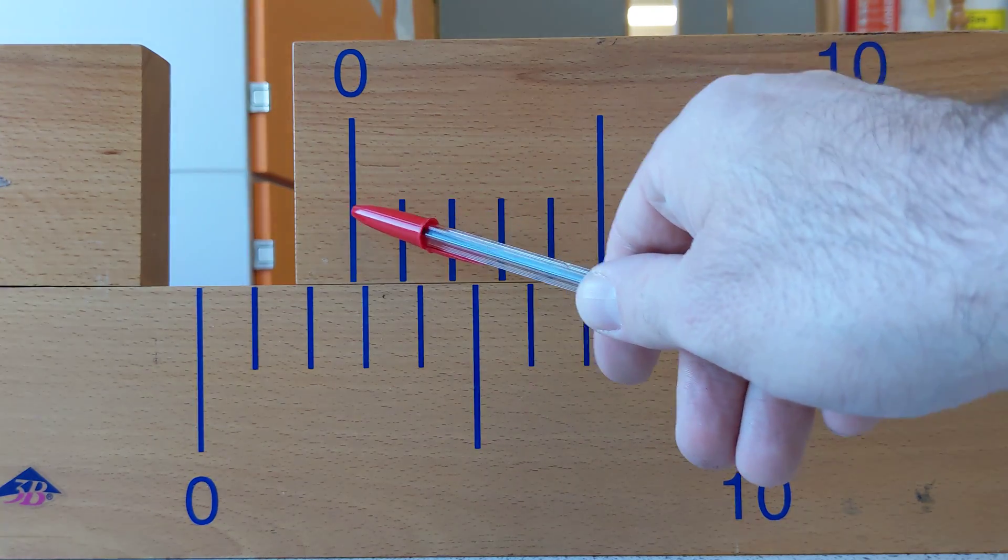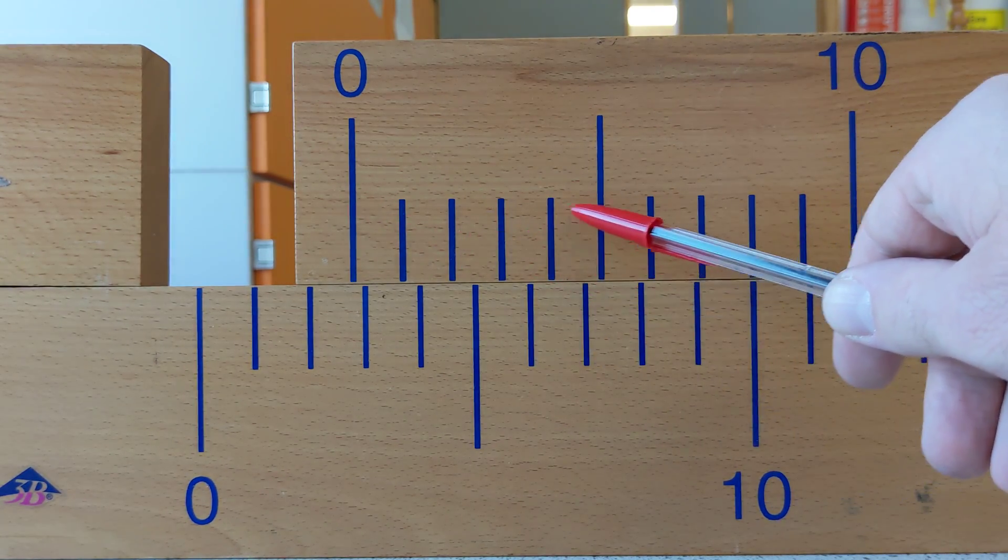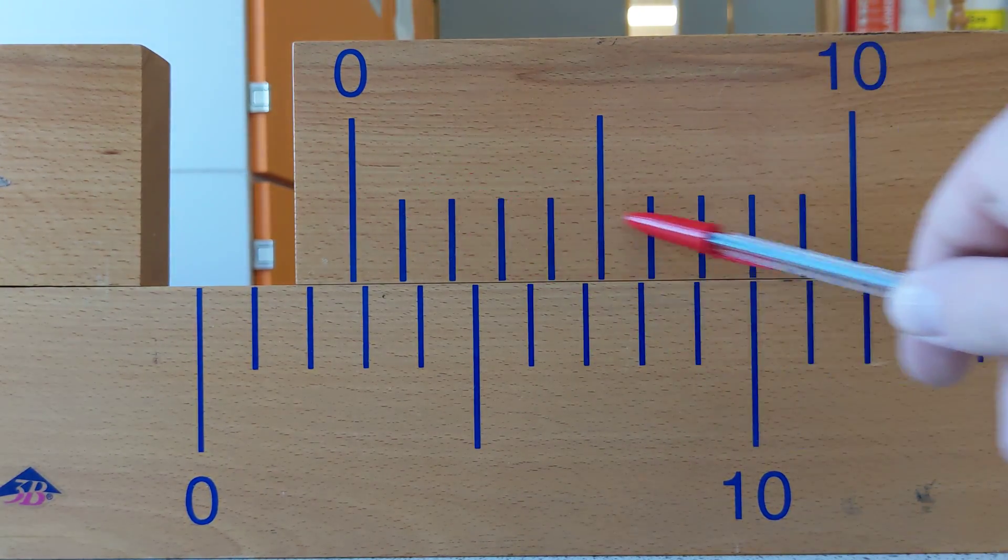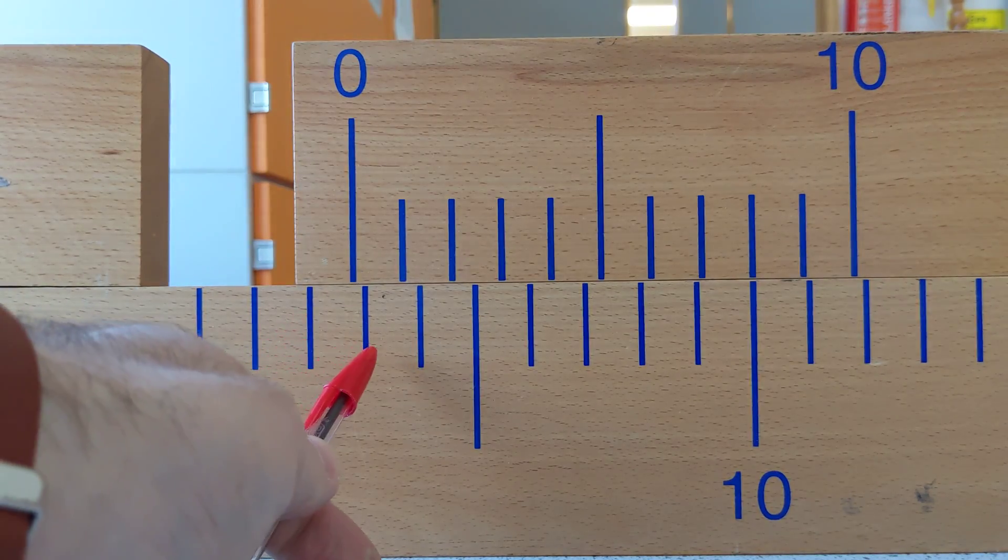Look along. These line up. This is zero, one, two, three, four, five, six, seven, eight. Eight tenths of the way from two to three.